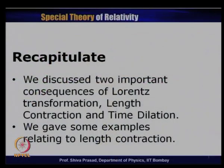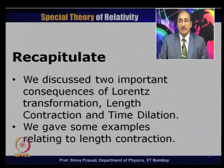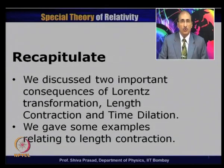Let us recapitulate what we had discussed in our last lecture. We discussed two important consequences of Lorentz transformation. One is length contraction, another is time dilation. We defined proper length as the length of an object measured in a reference frame in which the object is at rest. The x-component of this length will appear contracted in any other frame, where x is chosen along the relative velocity between the frames.